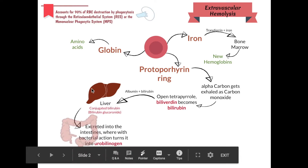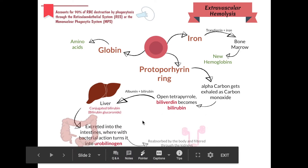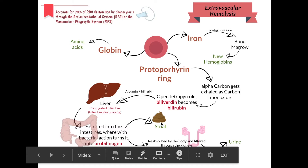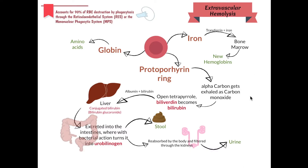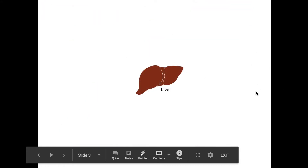In the liver, bilirubin becomes conjugated bilirubin, or bilirubin glucuronide. It then goes down into the intestine where it undergoes bacterial action. The conjugated bilirubin gets converted into urobilinogen. Some of it will show up in your stool, and some will be reabsorbed by the body and filtered through the kidneys, showing up in your urine. That's extravascular hemolysis.